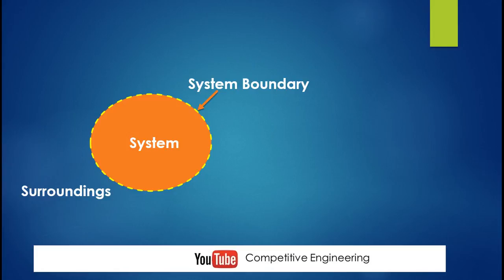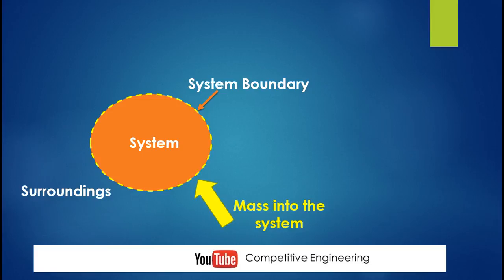Here we are looking at mass interaction first. Mass interaction means mass is moving from the system to surroundings, or from surroundings to the system. If the mass is moving from surroundings to the system, we call it mass into the system. Likewise, if the mass is moving from system to surroundings, it is called mass out of the system.